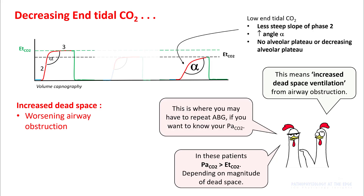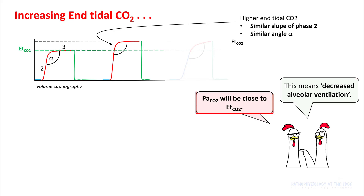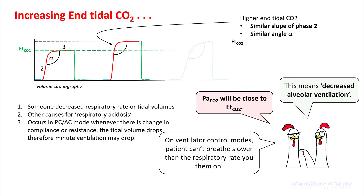In these cases, since you do not know where your PaCO2 is, you may have to repeat your blood gas if you want to know your PaCO2 accurately. If your end-tidals are increasing and your capnogram looks similar, that would mean you have decreased alveolar ventilation, and in these cases your PaCO2 will be close to end-tidal CO2. This is seen if you have decreased respiratory rate or tidal volumes. Understand that in control modes on the ventilator, the patient cannot breathe slower than the respiratory rate you set. In pressure assist-control mode, a change in compliance or resistance can cause tidal volumes to drop, decreasing minute ventilation and increasing end-tidal CO2.